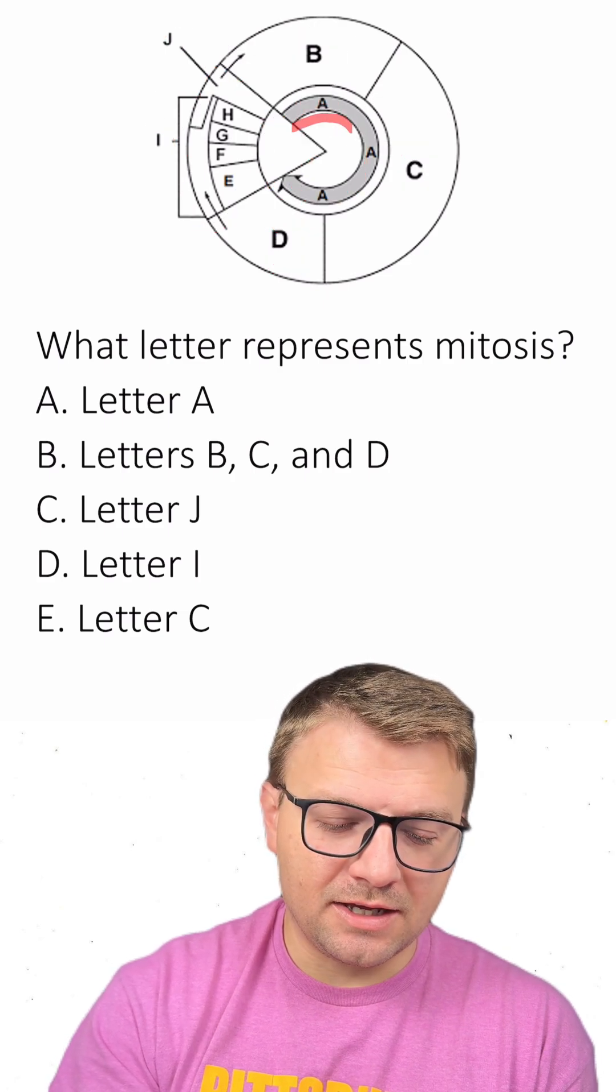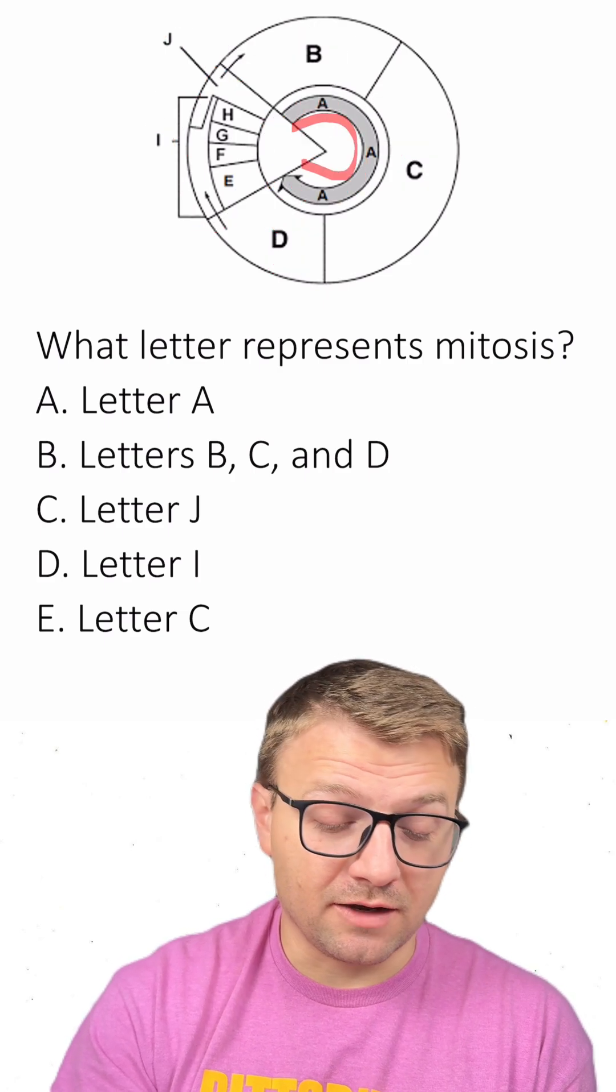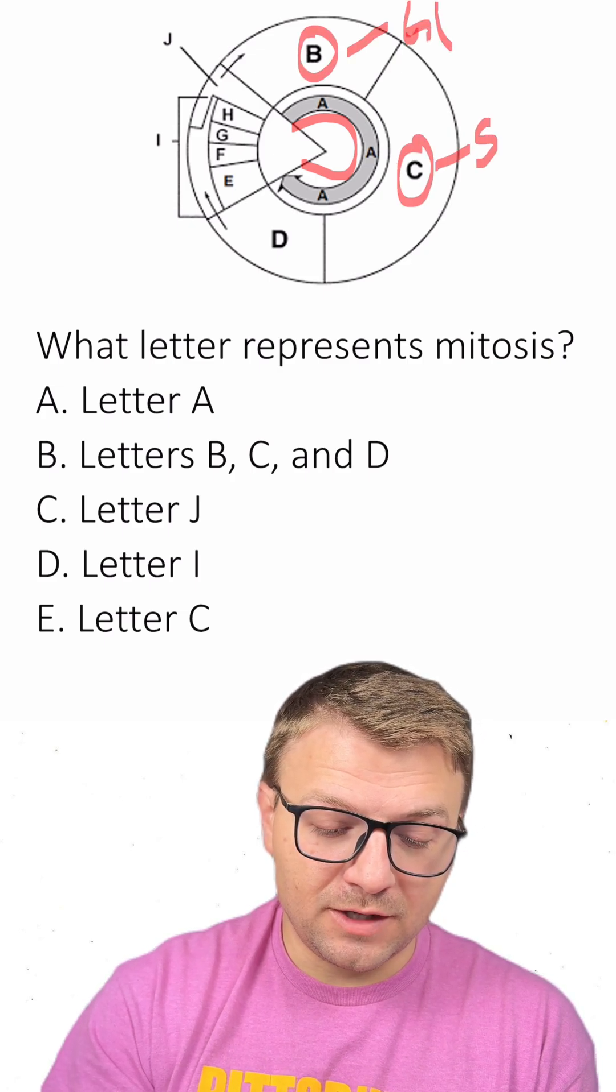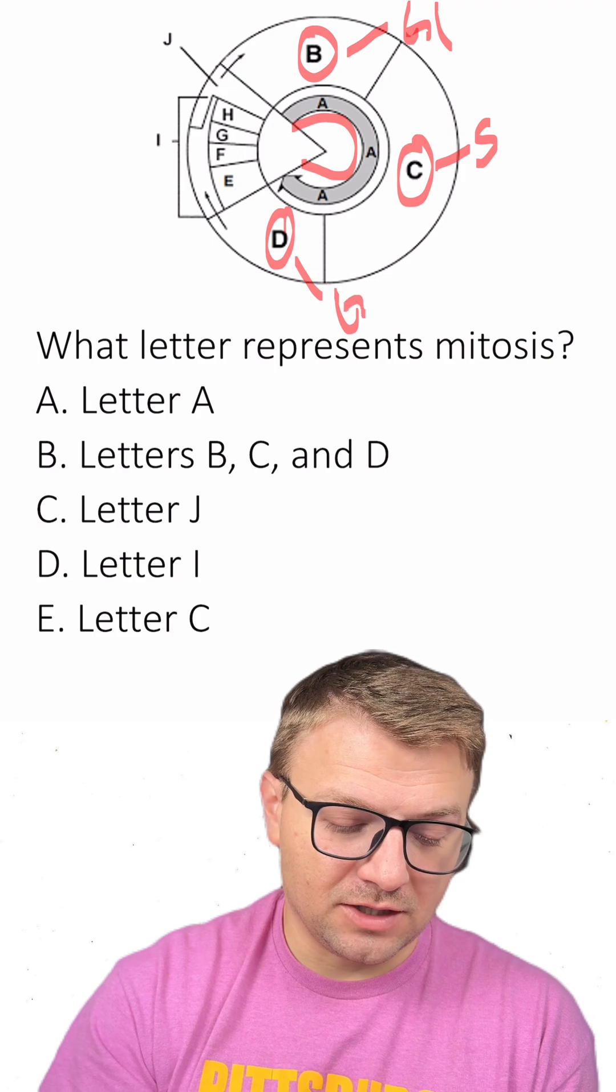So I can tell that A here is going to be interphase because it's the majority of the cell cycle. B here is going to be G1, C here is going to be S, and D here is going to be G2.